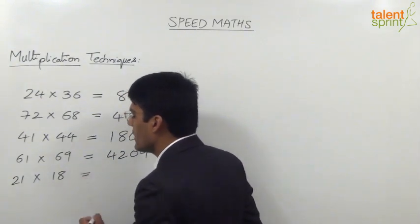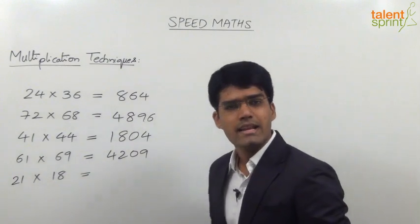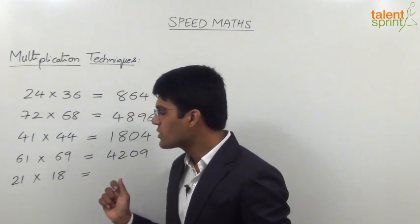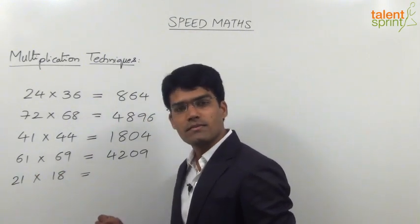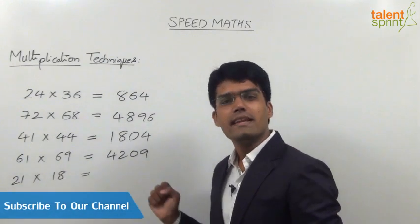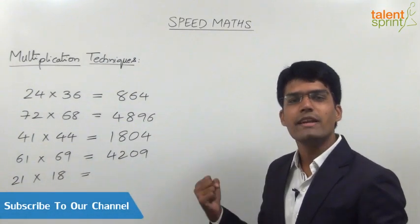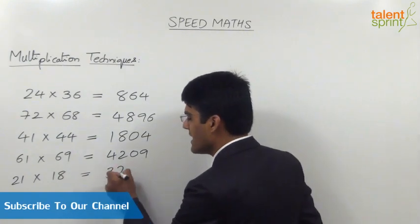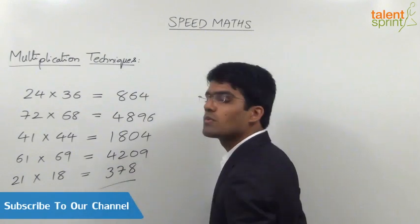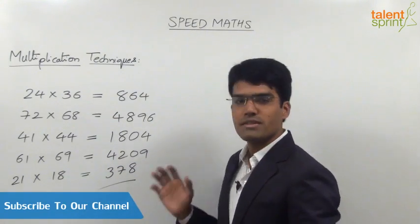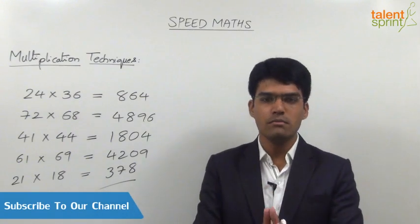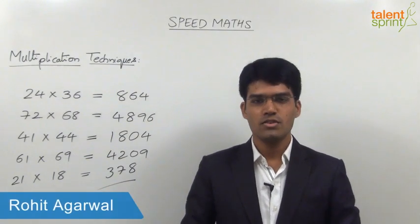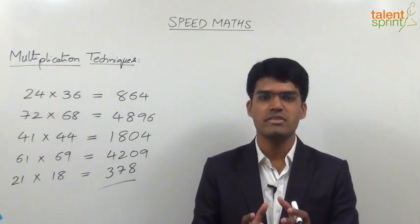The last question is 21 into 18. Since the difference is 3, which is odd, (a + b)(a - b) is not applicable. So using split and merge: take 18 twenty times, that is 360, then take it one more time, which is 18. So 360 + 18 = 378. This is how you solve questions using either split and merge or (a + b)(a - b) = a² - b². Practice well on these techniques and use them efficiently.